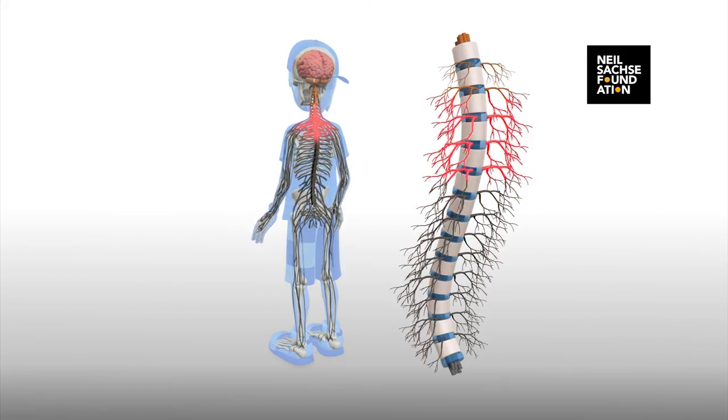Nerves that come out from here control your neck and shoulder movement, your breathing, and your heart rate. An injury at this site would result in loss of mobility and sensation to 90% of your body.